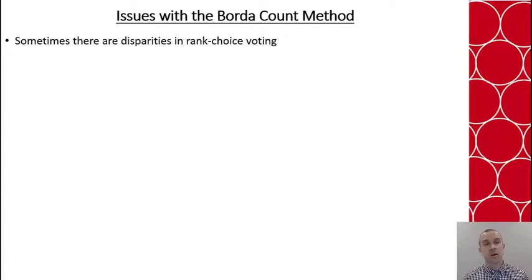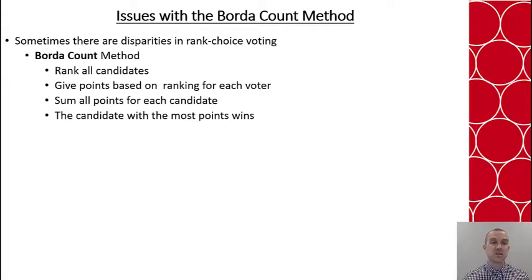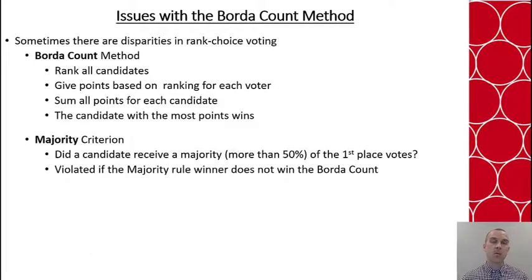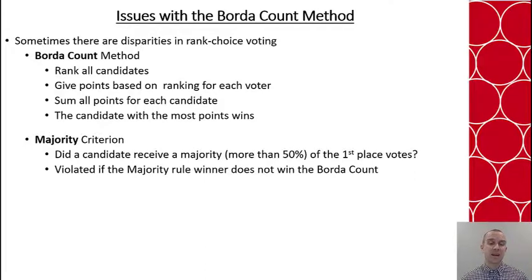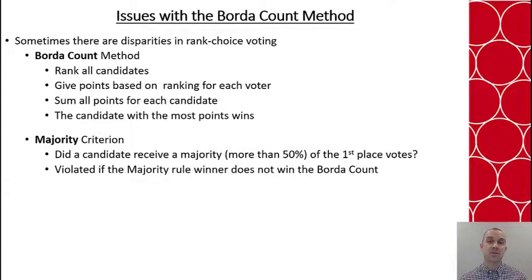Even the Borda count ranking method can have disparities. The Borda count method says we rank our candidates, give points based on ranking, and whoever has the most points summed is the winner. When we compare that to the majority criterion within the Borda count, we ask: is there a candidate who gets over 50% of the first-place votes? That would be like a majority rule. However, there are times when that candidate may not win the Borda count — and when that happens, we say the majority criterion has been violated.